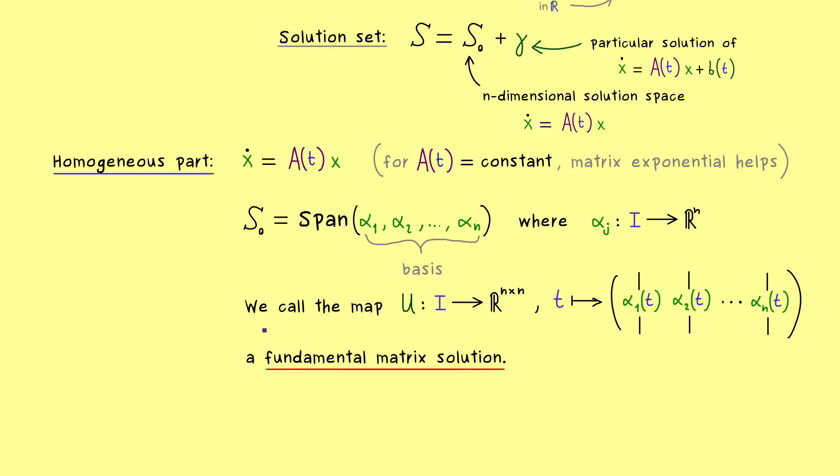In fact, this is exactly what the matrix exponential does in the autonomous case. So in that case, e^(tA) is a fundamental matrix solution. Therefore, in the non-autonomous case, this is the natural substitute we have for the matrix exponential.